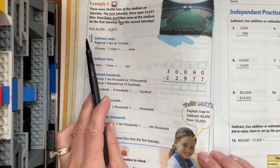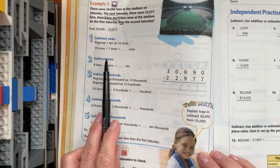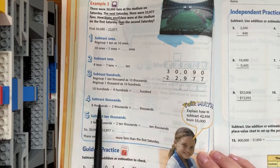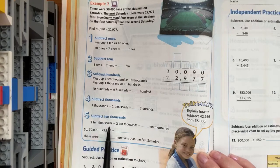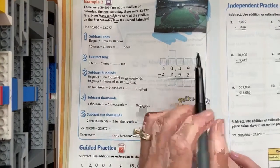So, they have our steps. We're going to subtract the ones, then we're going to subtract the tens, then the hundreds, then the thousands place, then the ten thousands place. That's going to look like this.